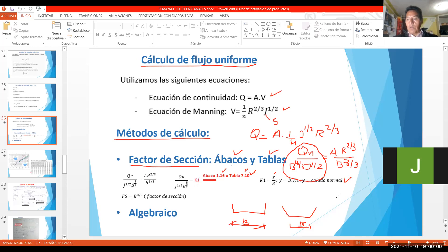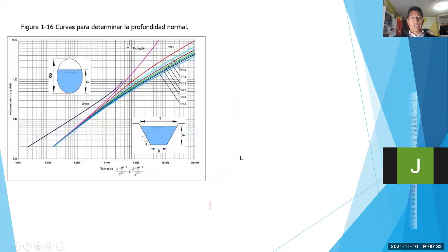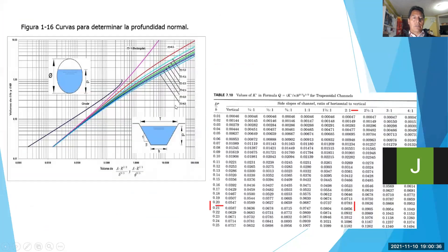Entonces puedo trabajar a través de este método para obtener el calado. Después de obtener el calado, continúo calculando la velocidad, calculando el tipo de flujo, calculando lo que quiera dentro de eso. Voy a ver la siguiente lámina y ahí terminamos. Pueden ver estos ábacos — aquí están los dos gráficos. Esos son gráficos que ustedes pueden encontrar en cualquier libro de hidráulica, por ejemplo en el libro de Rodríguez, el libro de Chow, el manual de King, que están en la bibliografía y también subidos en la plataforma.